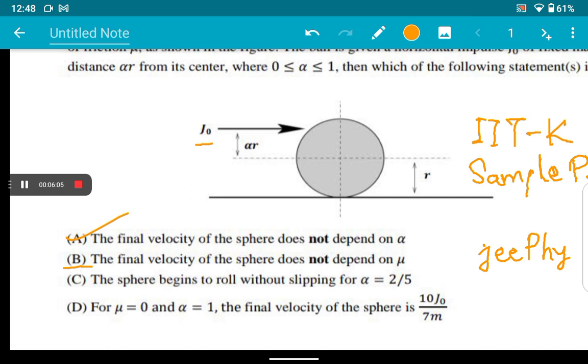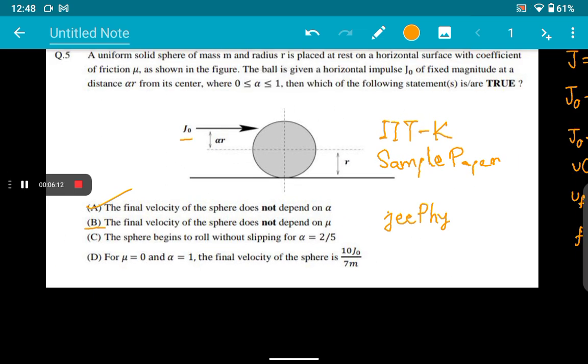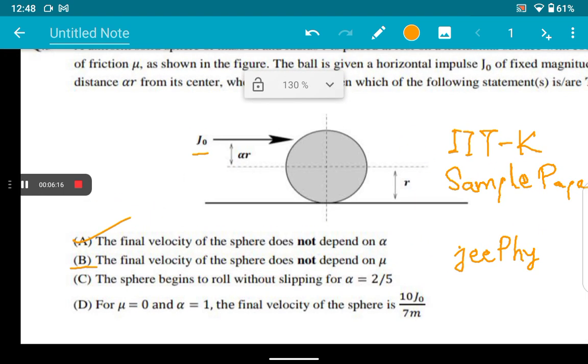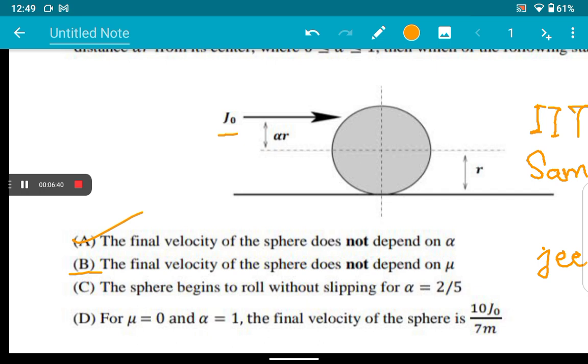That raises an ambiguity in the question. If you speak mathematically, this option B should not be correct. But if we speak theoretically, that the impulse due to friction is very less and negligible, then it should be correct. I am not commenting on the option right now. As everyone knows, the whole thing is based on mathematics. In the examination hall, I would have gone mathematically and I would not risk my one mark. If you get one wrong, you will get minus two. That's a big loss. You cannot afford to lose so many marks. In the exam hall, you should not tick option B because this is ambiguous.